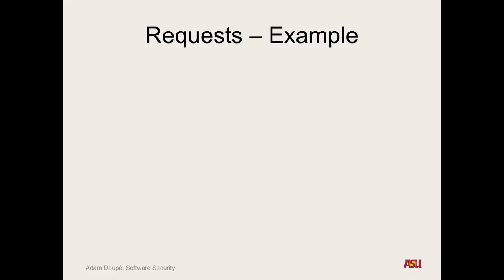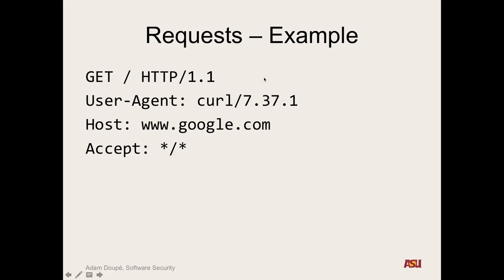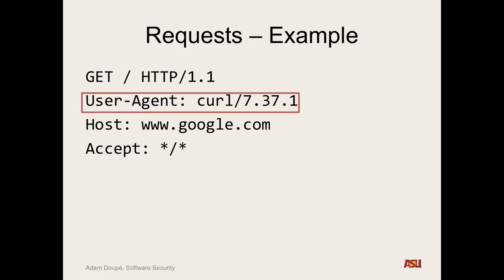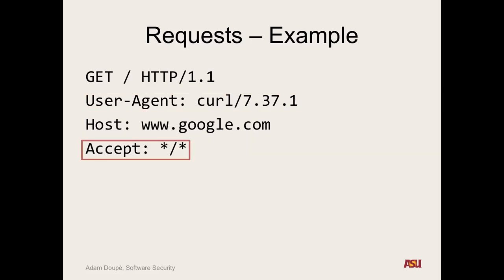Let's look at an example request. On the first line — the status line — we have GET as the method, slash as the resource, and HTTP/1.1 as the protocol. Then we have a series of headers. This says it came from curl, trying to access google.com. The Accept header tells the server the content encodings the client supports, like gzip. The headers can be in any order.